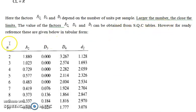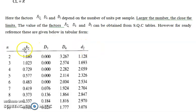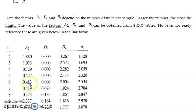In the SQC tables, values of A2, D3, and D4 are given, as well as small d2, which we will discuss in a later video. Here you can see an SQC table with different values of A2, D3, and D4. For example, if the sample contains 6 items, you select the row where sample size is 6 and take the corresponding values of A2, D3, and D4.